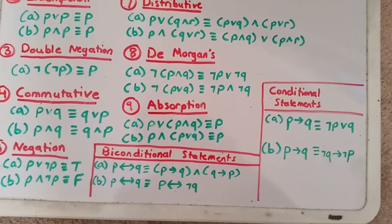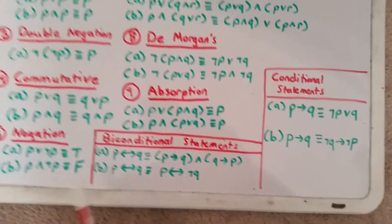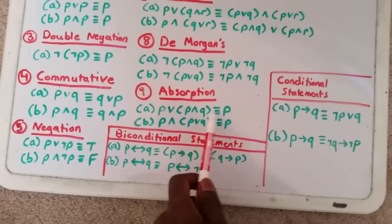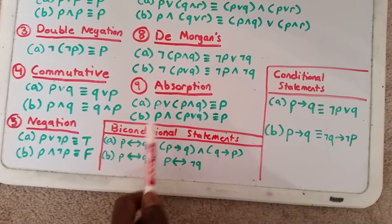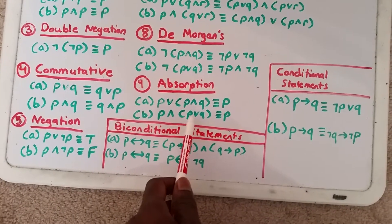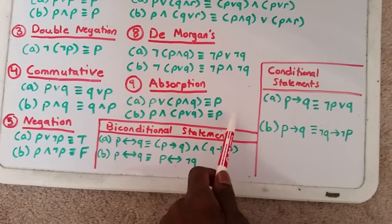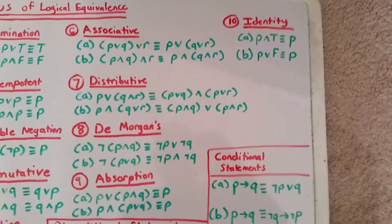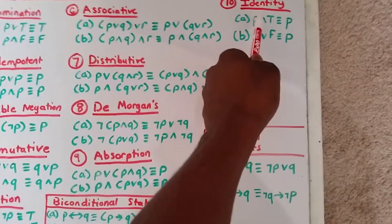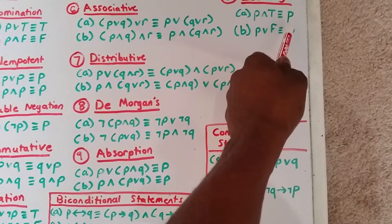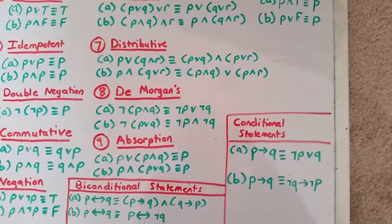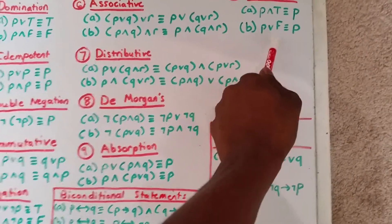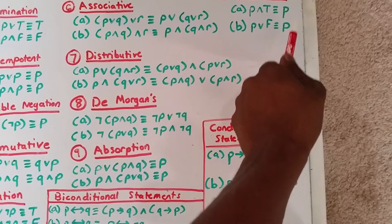Then there's the absorption law. It states that P or (P and Q) is logically equivalent to P, and P and (P or Q) is logically equivalent to P. Last but not least is the identity law: P and true is logically equivalent to P, and P or false is logically equivalent to P.